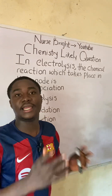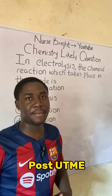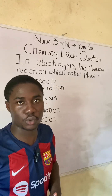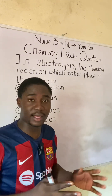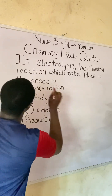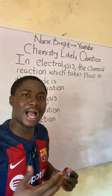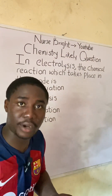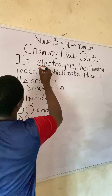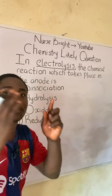If you came across this question in your chemistry exam — whether you are preparing to write the JAMB exam, post-UTME examination, or you are already in your first year at a university — how will you solve it? It is extremely easy. The question says: in electrolysis, the chemical reaction which takes place in the anode is what? They are asking us what type of chemical reaction takes place in the anode. First, we have to understand the concept of electrolysis.